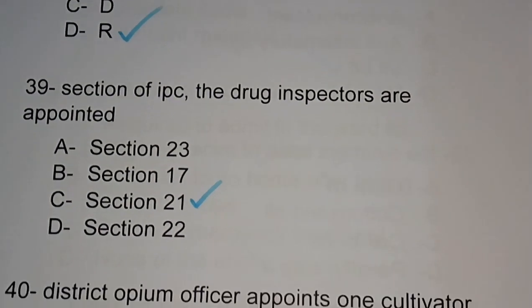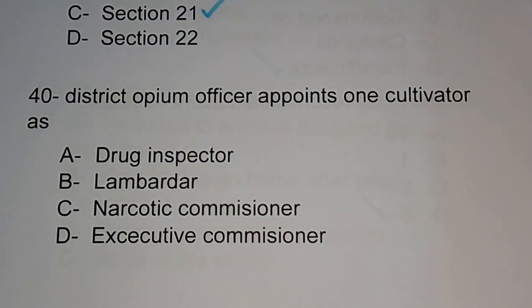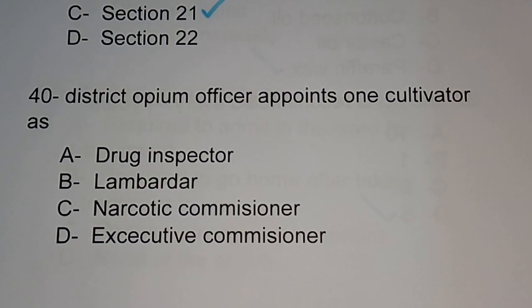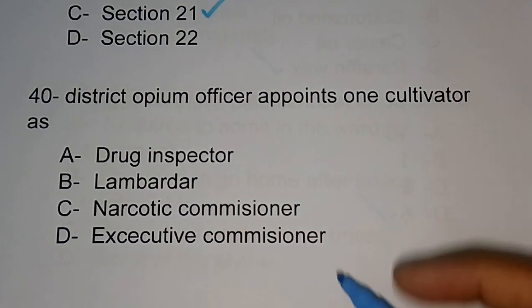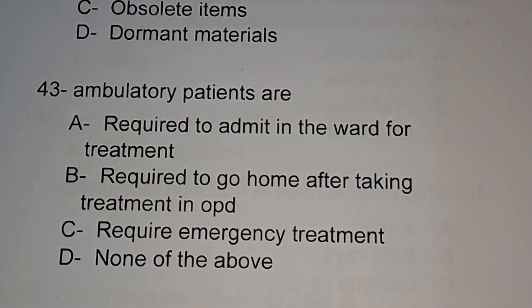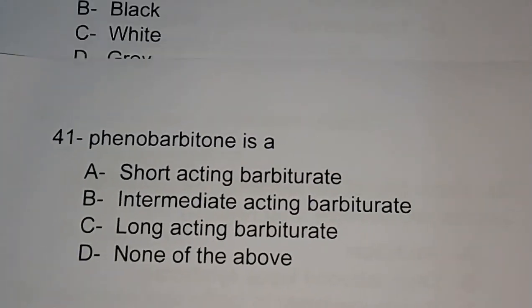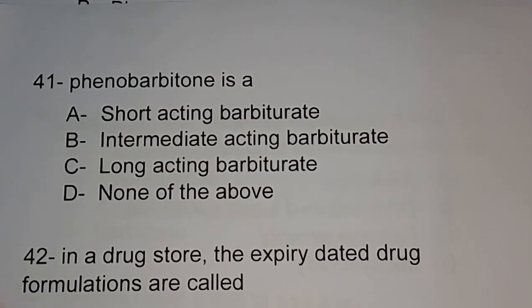Question number 40: a district opium officer appoints one cultivator as — options are drug inspector, Lambardar, narcotic commissioner, executive commissioner. The correct answer is option B, Lambardar.